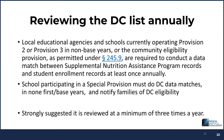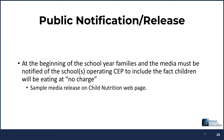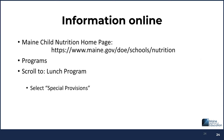Public notification: if you are going to participate in the Community Eligibility Provision, you must notify the families in the district of that participation. We have a sample media release on the Child Nutrition webpage. There's more information online — at the Maine Child Nutrition webpage, select Programs, scroll down to the lunch program, and the first option in the selection bar is Special Provisions, which may help with other questions.